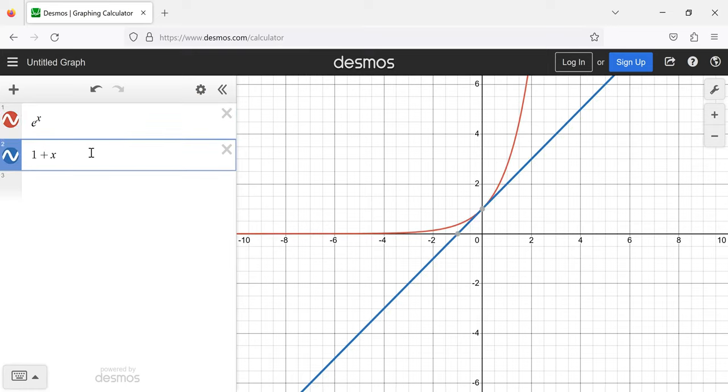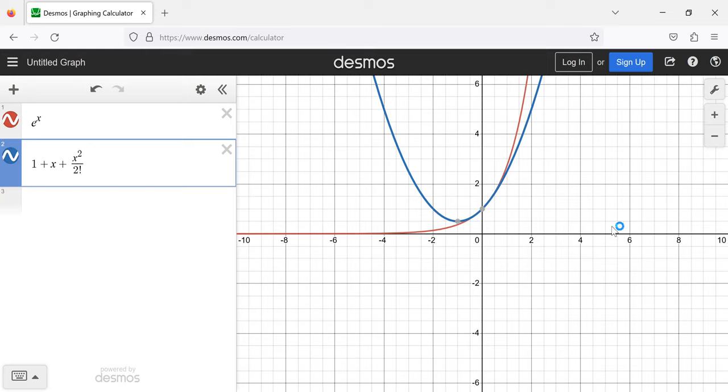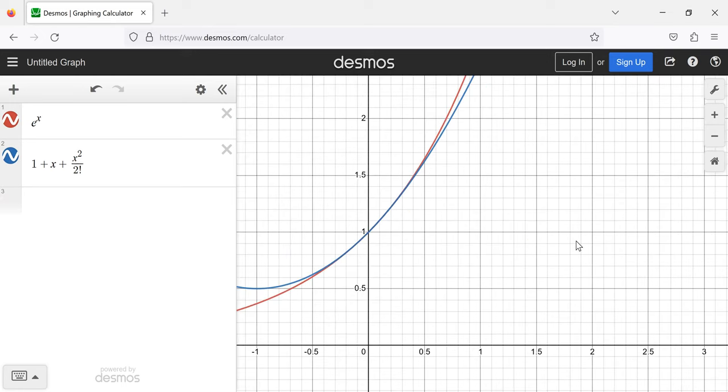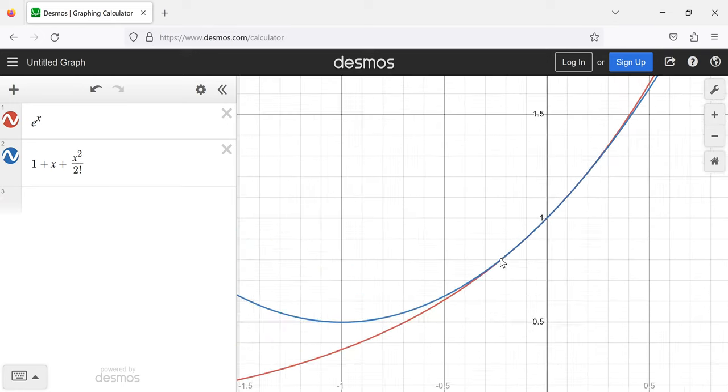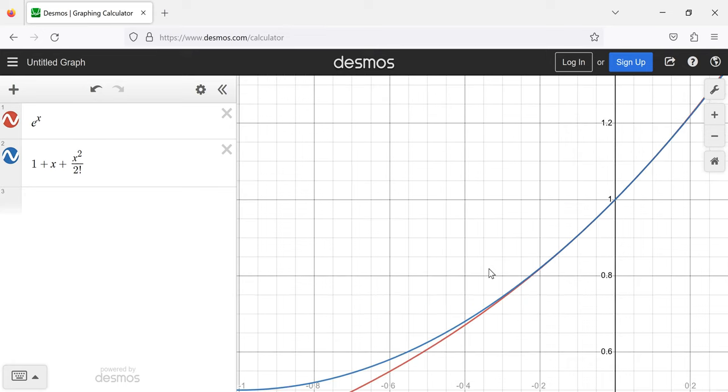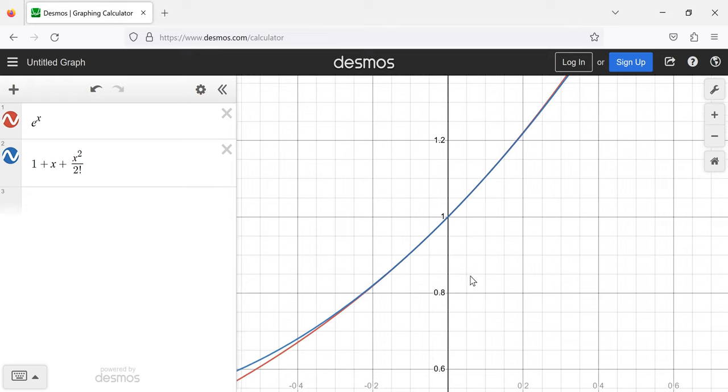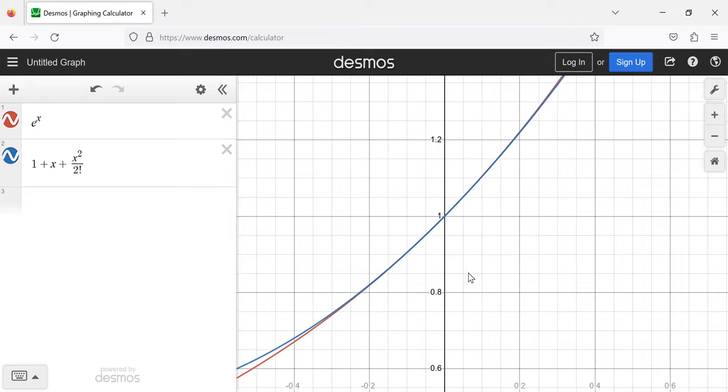But even if we add just a second term, just a quadratic term, if we zoom in and look at this part of the graph, now these things do look similar.